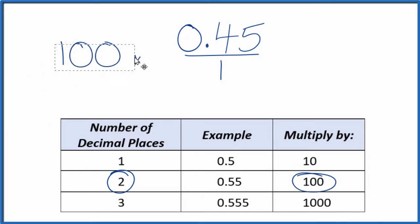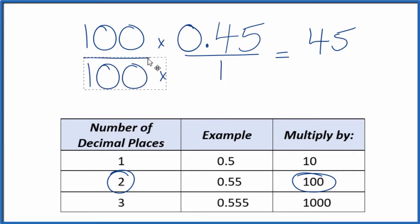So 100 times 0.45, that'll end up giving us 45, and that is a whole number. But we also need to multiply the denominator by 100, because 100 over 100, that's equal to 1, so we're just multiplying by 1.